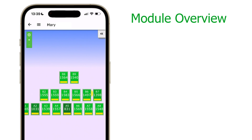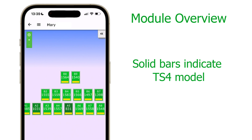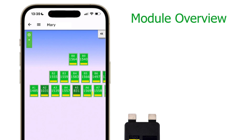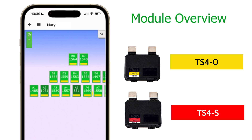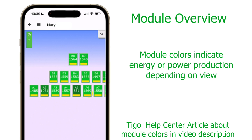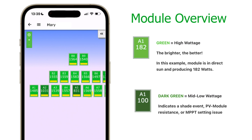Use one finger to reposition the view. There are a few things to observe when looking at the array. First, the colored bar at the bottom of each module indicates the type of TS4 used — a yellow bar represents the TS4-O and a red bar represents the TS4-S. You can see that even the modules show varying degrees of green; these shades indicate the amount of power produced, with lighter green indicating more power than darker shades.